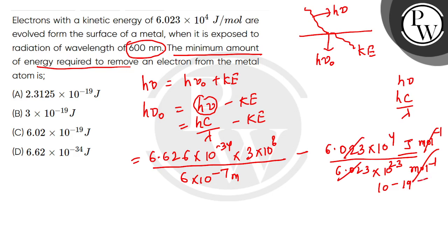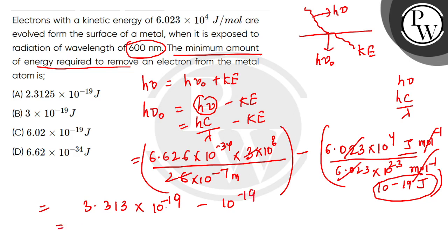Let's solve this. The first portion: 3 cancels with 6, leaving 3.313 × 10^-19 in numerator. The exponents are -34 + 8 + 7 = -19. So we have the common factor 10^-19: 10^-19 times (3.313 - 1), which equals 2.313 × 10^-19 joules. This is the work function.